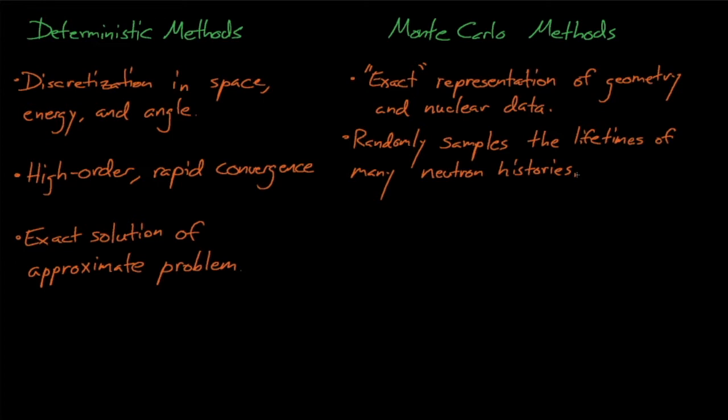They use random numbers to simulate how far these particles will travel before they undergo some interaction, what kind of interaction they'll have, if the particle will survive that interaction, and if it survives, what the particle will do next.